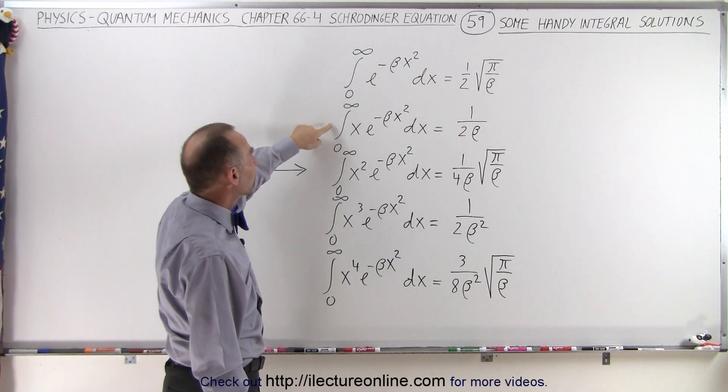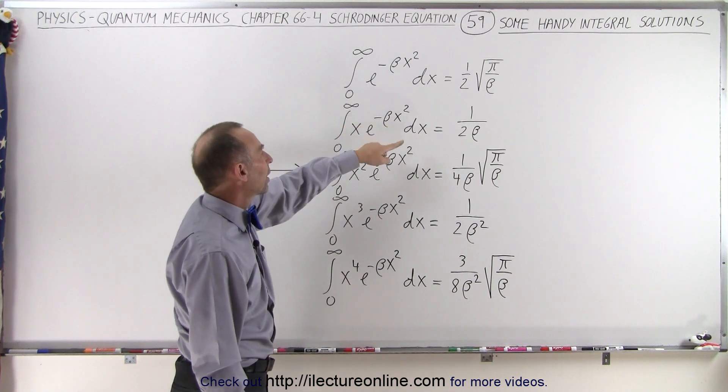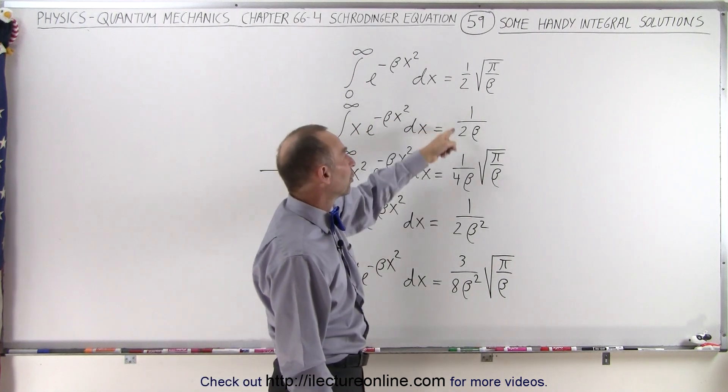If we have this equation right here, the integral from 0 to infinity of x times e to the minus beta x squared, you can see that it's easy to find the proper differential, and the solution will be 1 over 2 beta.